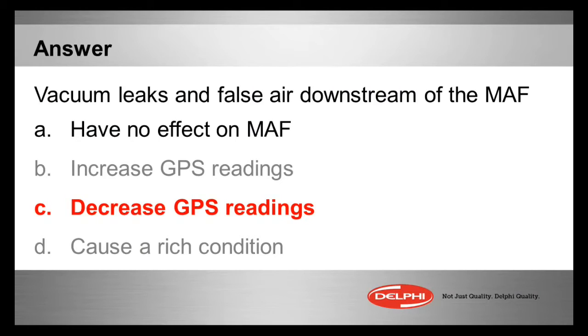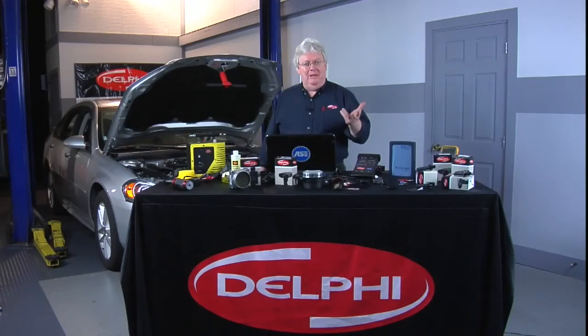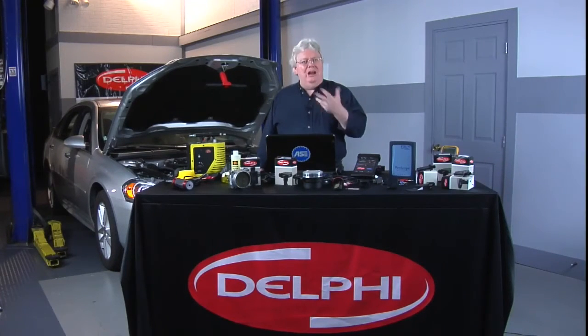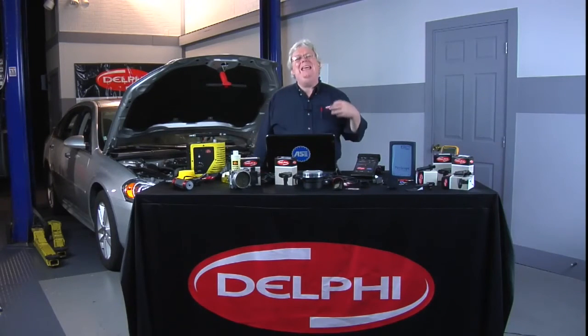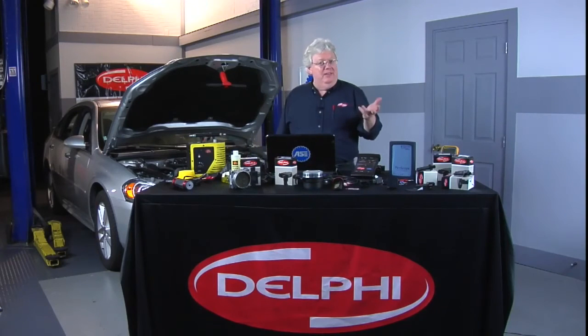The reason is if you have air that's unmetered, or false air as it's sometimes called — whether it be a normal pressure air leak like between the mass air flow sensor and the throttle body, or a negative pressure leak like in the intake manifold after the throttle body, a vacuum hose, the throttle body in the intake, or the intake in the head — those kinds of leaks are unmetered air. The mass air flow won't see them, so it won't tell the computer how much air truly is entering the engine.